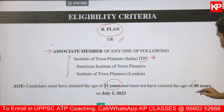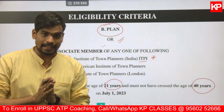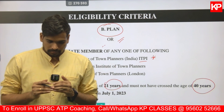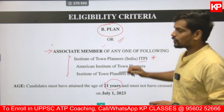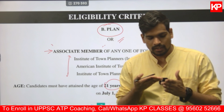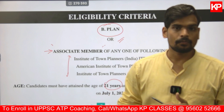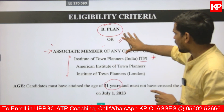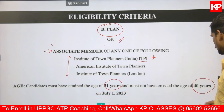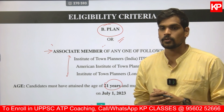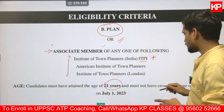As far as age criteria is concerned, you should have a minimum age of 21 years and the maximum age limit is 40 years for the unreserved category. The reference date for age criteria is July 1st, 2023. You should have your educational qualification completed by the last date of application, which is 14th September 2023. You should have either B.Plan or associate membership with ITPI, the American Institute, or ITP London by that date.